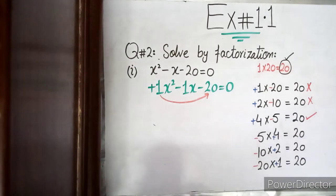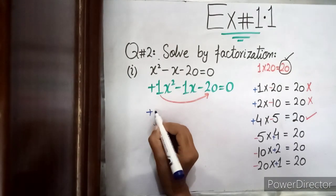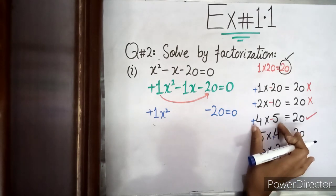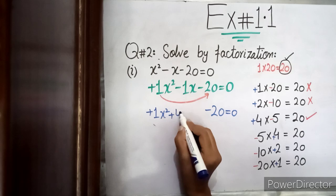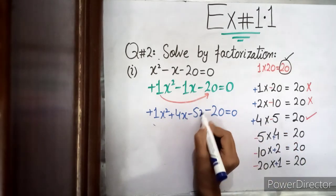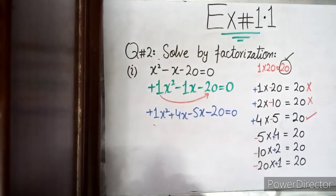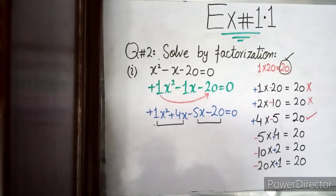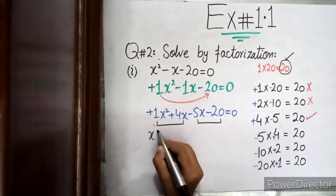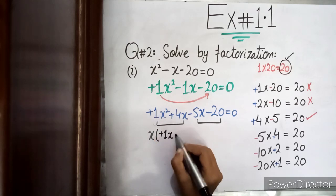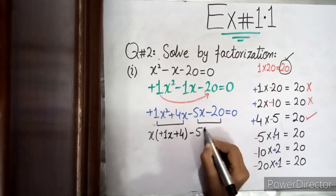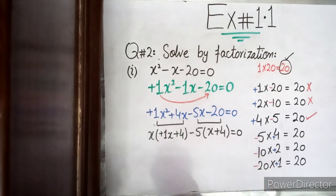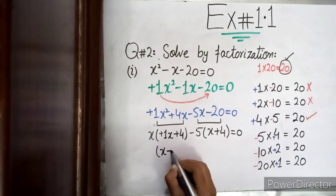Once we have the correct factors, we keep the first and last terms as they are, and introduce the factor pair in place of the middle term. So the middle term becomes plus 4x and minus 5x. Then we make two pairs and take the common factor from each pair: x common gives x plus 4, and then minus 5 common also gives x plus 4.